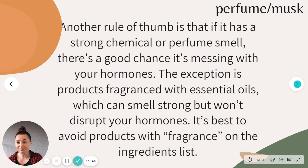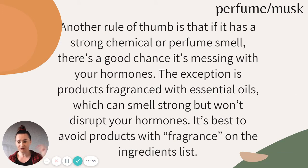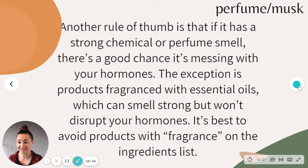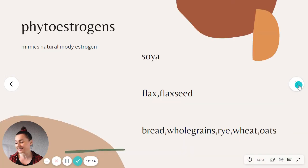The exception is products fragranced with essential oils — these can smell strong but won't disturb your hormones. It's best to avoid products with 'fragrance' on the ingredients list, which means literally everything. After this video, when you check the sheet I'll provide and look at your bathroom products' ingredients lists, you'll find the majority have 'fragrance' listed — shampoos, shower gels — it's basically everywhere.